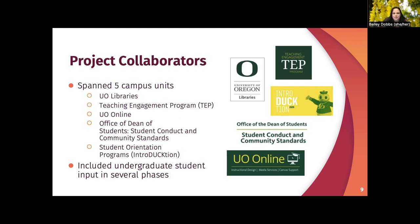The main collaborators spanned five different units on campus: UO Libraries, our Teaching Engagement Program (TEP), UO Online, the Office of the Dean of Students — particularly their unit on Student Conduct and Community Standards — and Student Orientation Programs, who put together the orientations known as Introduction for incoming freshmen and transfer students. Additionally, we had the assistance of student employees who provided advice, feedback, and content for the module — we'll talk more about their contributions in just a bit.